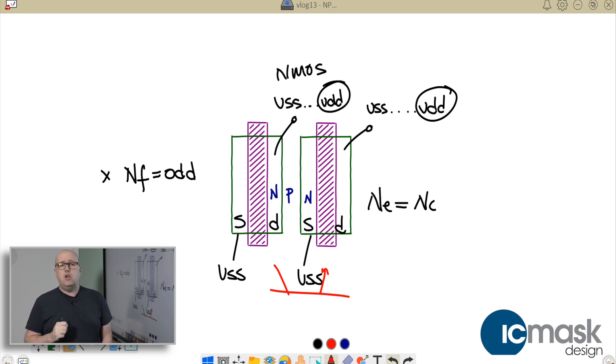But here what we have now is the spacing, and effectively the spacing is N plus to N plus. This is a small spacing and of course this spacing shrinks with technology. This spacing is our base thickness.